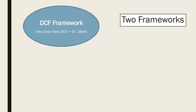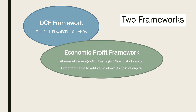The two frameworks we will use are the DCF framework and the economic profit framework. The DCF framework looks at free cash flow, which we'll often simply call cash flow. Free cash flow is a firm's operating income, OI, less our net investment in the business for a period — that is, change in net operating assets.